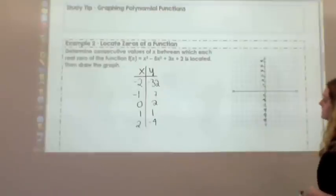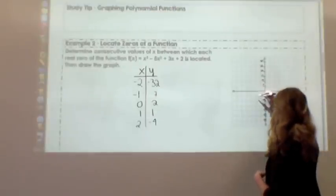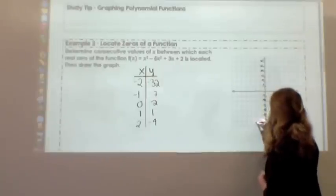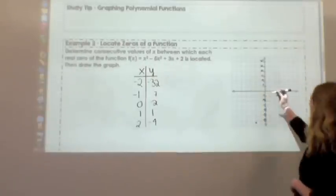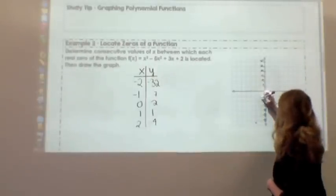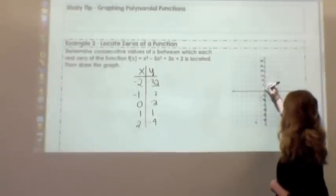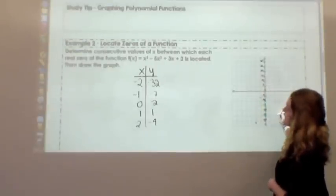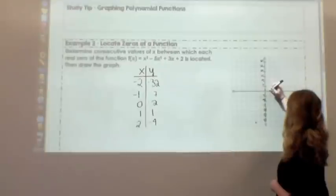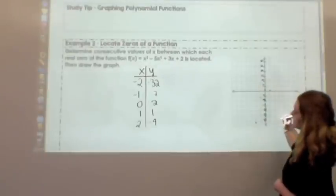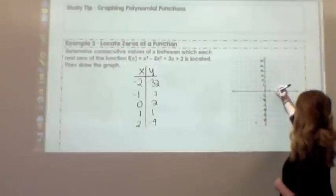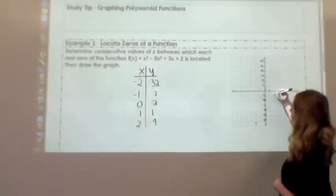Alright, so now I'm just going to plot some coordinates. So at negative 2, I'm all the way down at negative 32. We'll say it's approximately right here. At negative 1, I'm at negative 7, approximately here. At 0, I'm at 2. At 1, I'm at 1. So it's slightly below where I just plotted. And at 2, I'm at negative 4.